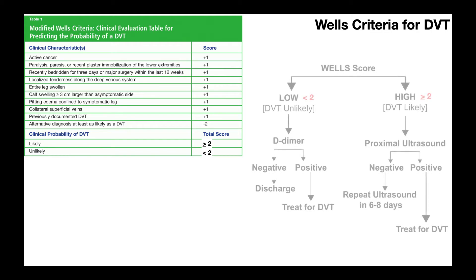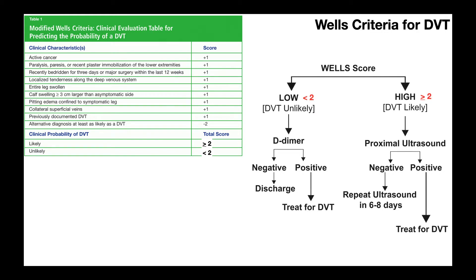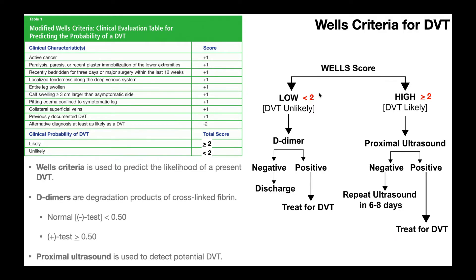Now let's look at some tests that allow us to further rule up or rule down a DVT. We have our Wells score, and if the score is less than two — so one, zero, or negative — it's a low risk and the DVT is unlikely. However, even if the score is one, that doesn't mean the risk of a DVT is zero. It could be hiding, and maybe some findings just don't present in that patient. So you might have a D-dimer test ordered to confirm or refute a DVT.